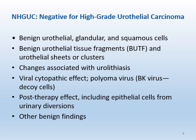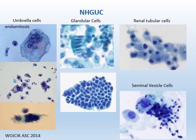NHGUC — negative for high-grade urothelial carcinoma — is a new diagnostic terminology and includes a variety of situations that previously could be in an atypical category. It includes benign urothelial, glandular, and squamous cells; benign urothelial tissue fragments; urothelial sheets or clusters; changes associated with urolithiasis; viral cytopathic effect, especially polyomavirus; post-therapy effect including epithelial cells from urinary diversions; and other benign findings. It is important to know this category well, as some are close mimickers of atypical urothelial cells.